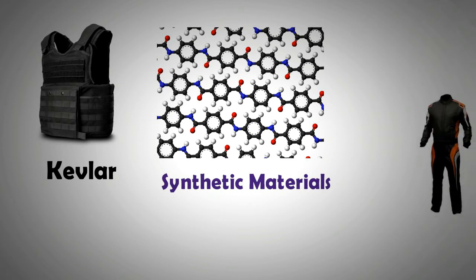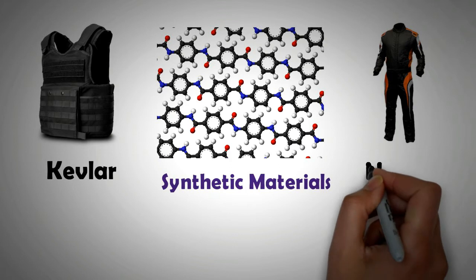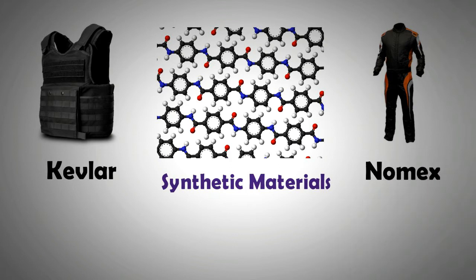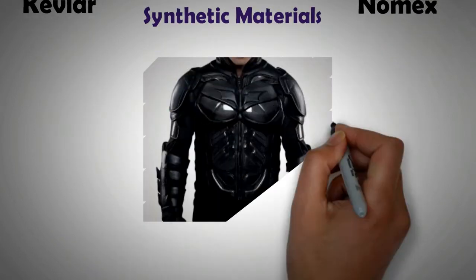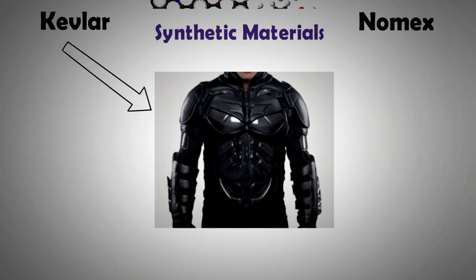And likewise Nomex is a flame resistant aramid material that is not only used in electrical laminates and circuit boards, but also as a fabric where resistance from heat and flame is required. Interestingly Batman has been reported to have used both Kevlar and Nomex in his suits.